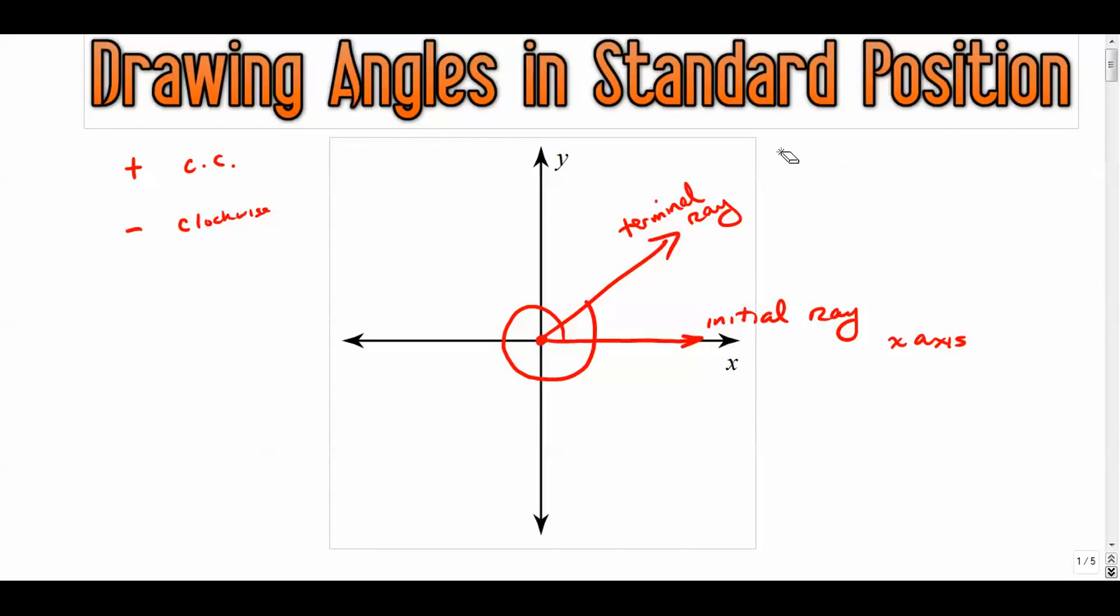Angles in standard position have their initial ray on the positive x-axis, their vertex on the origin, and their terminal ray depending on whether it's positive or negative will reside in quadrant one, two, three, four, or sometimes it could lie on any of the axes.